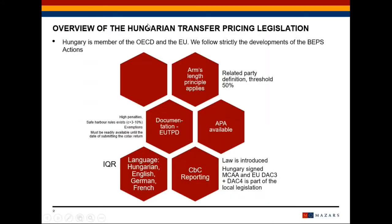If you go to the next slide, you can see that Hungary is a member of the OECD and the EU. We follow strictly the developments of the VAT actions through the EU directives like the anti-tax avoidance directive, the CBC reporting, and also the automatic exchange of information. In Hungary, the arms length principle applies to intra-group transactions.